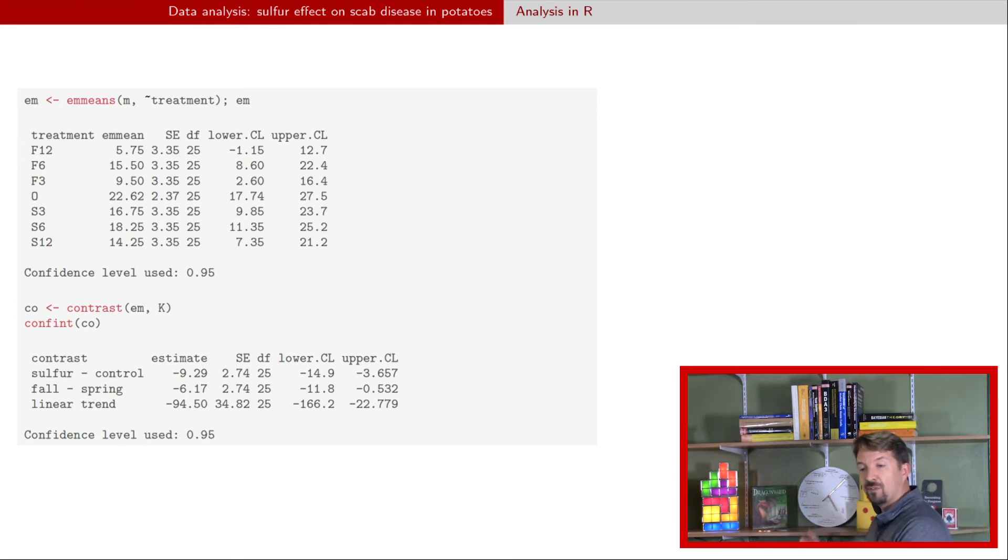We can see in terms of fall versus spring that fall application seems to be better at reducing scab percent than spring. And we have our linear trend here, which again, we can't make out too much of the actual values of those numbers, but we know that the confidence and credible interval does not include zero. So it's significant. If we had just taken the contrast output, we would have gotten a p-value, and that's what you'll see on the summary slide.